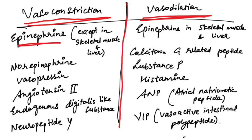Epinephrine causes vasoconstriction all around the body except in the liver and skeletal muscles. Norepinephrine causes vasoconstriction.